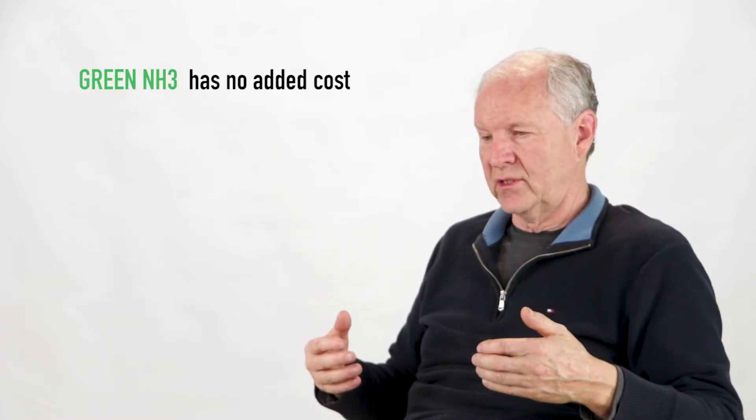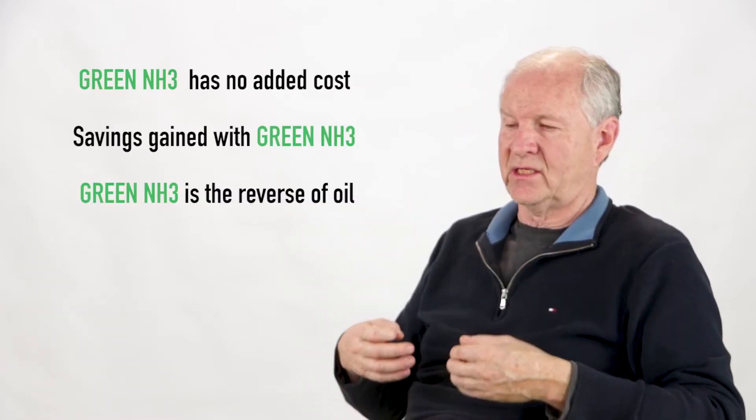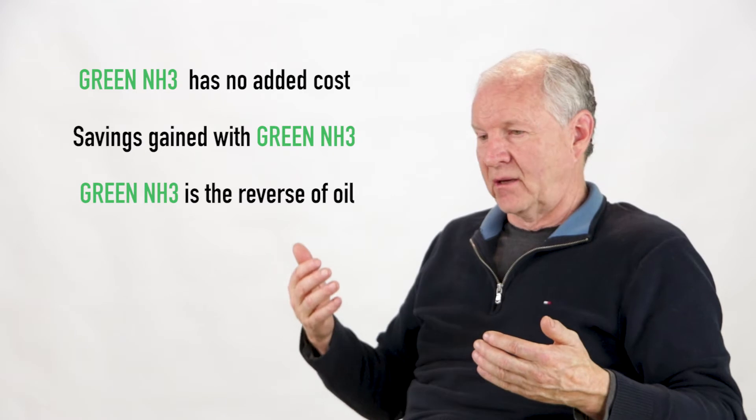These oil companies that are out in Alberta and in the tar sands, they're going to walk away, you can be sure, at some point in time. And it'll just be like another disaster, like up in the Arctic someplace. There's a disaster up there and who ends up paying for it? The citizens of Canada. Whereas with the green NH3, there's no cost to the citizens, it's only a savings. It's the reverse of oil, it's the complete reverse of oil. The green NH3 cleans up the world as you use it.